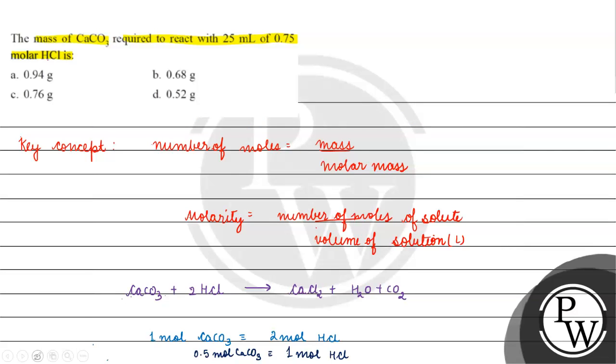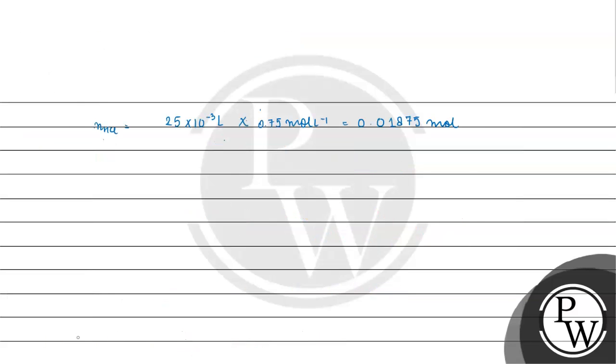We have to know that 1 mole of HCl reacts with 0.5 mole calcium carbonate. So, if we have 0.01875 moles of HCl, we react with 2 into 0.01875 moles of calcium carbonate. This will be basically 0.009375 moles.